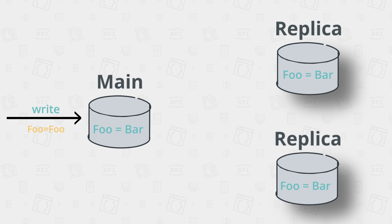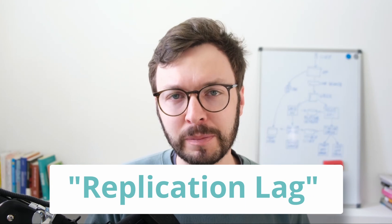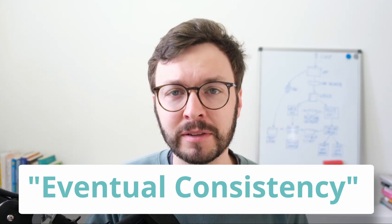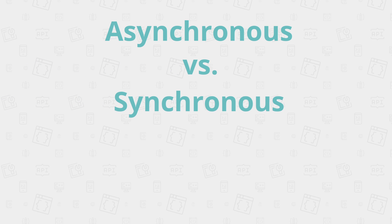In the main replica pattern, replication of newly written data happens asynchronously. This means that the data on the main and the replicas may not be consistent for a while, because replicas haven't caught up with the latest changes yet. If you need a fancy term for this in your system design interview, you should call it replication lag. The consequence of those lags is that a relational database applying the main replica pattern has the property of eventual consistency — it's not strongly consistent, and depending on the use case this can be critical.